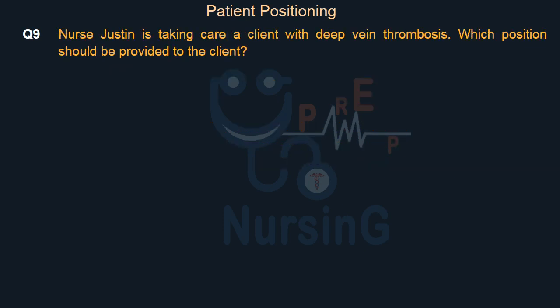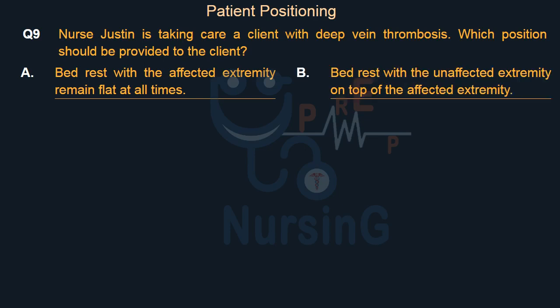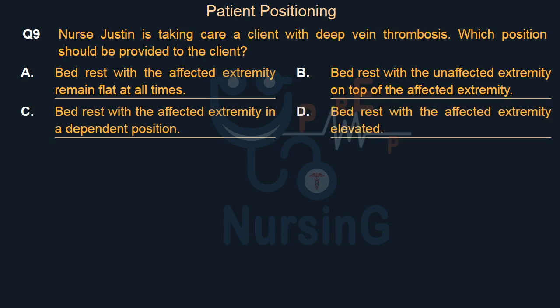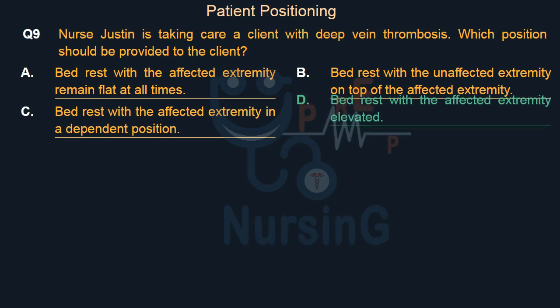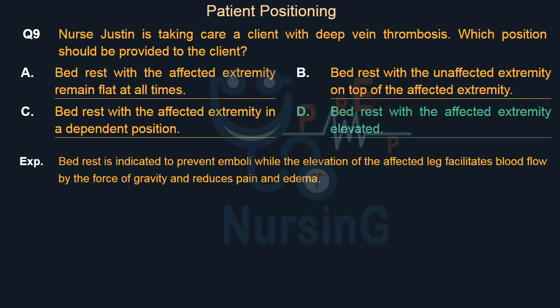Nurse Justin is taking care of a client with deep vein thrombosis. Which position should be provided to the client? Option A, bed rest with the affected extremity remaining flat; Option B, bed rest with the unaffected extremity on top of the affected extremity; Option C, bed rest with the affected extremity in a dependent position; Option D, bed rest with the affected extremity elevated. The right answer is Option D. Bed rest is indicated to prevent emboli, while elevation of the affected leg facilitates blood flow by gravity and reduces pain and edema.